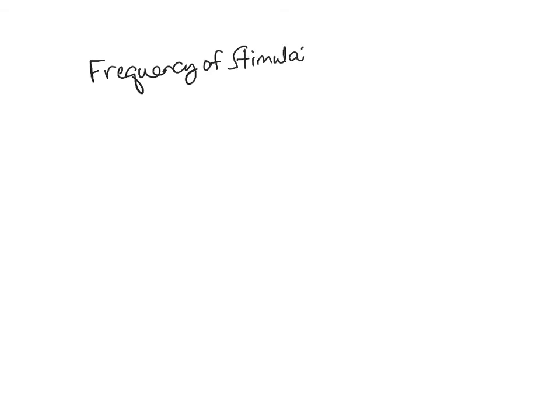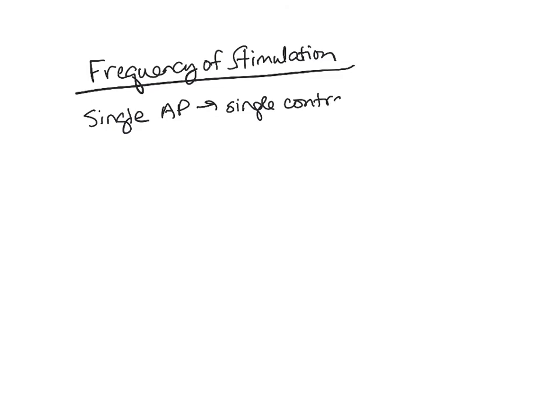The second thing that can cause variation of tension is the frequency of stimulation. A single stimulus — a single action potential — will produce a single contraction. That single contraction is called a twitch. The twitch lasts anywhere from seven to a hundred milliseconds, so it's pretty short. A single twitch is so brief that there's not going to be enough time to activate a significant number of cross bridges, so there's really not enough contraction to produce enough tension for any useful work to occur in the muscle.